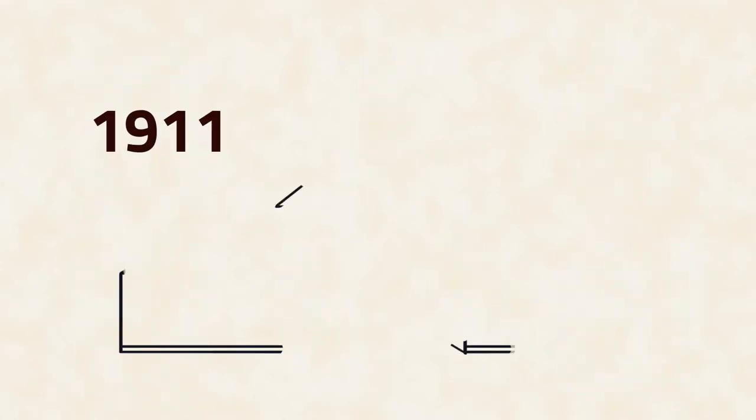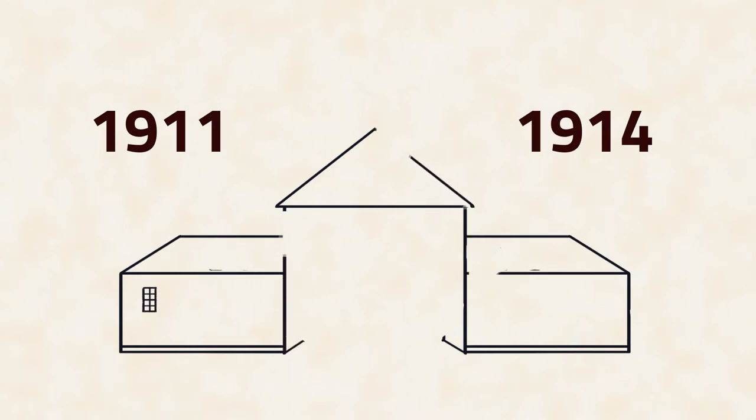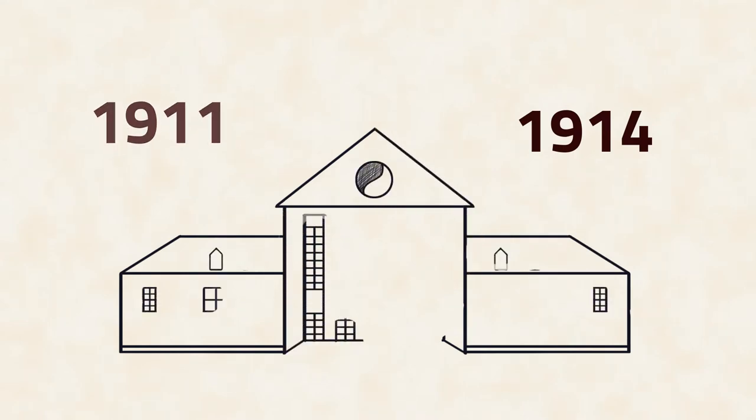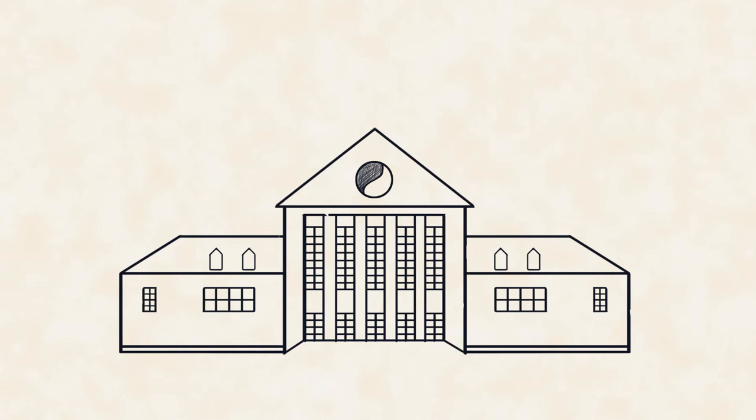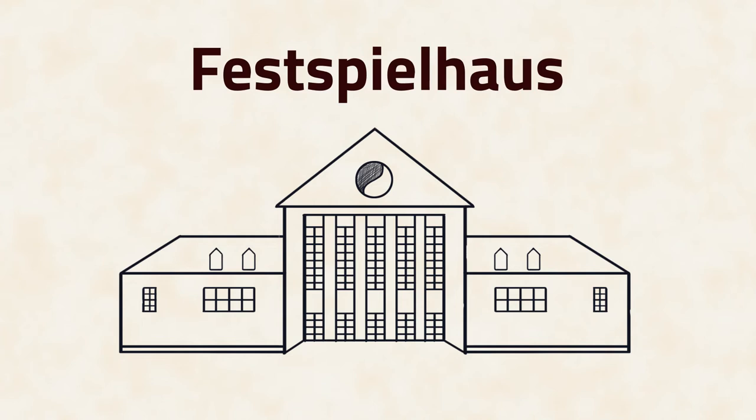Between 1911 and 1914, international and transdisciplinary exchange was at its peak at the Institute for Music and Rhythm in Hellerau, close to Dresden. Its center was the Festspielhaus, specially designed for this purpose.